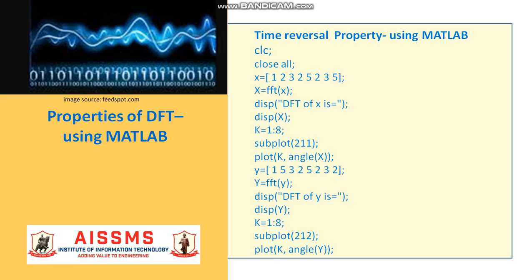For our input sequence X equal to 1, 2, 3, 2, 5, 2, 3, 5, the DFT calculated using FFT of X is stored in capital X and then displayed. For K going from 1 to 8 we will use subplot to plot this and then use command plot K comma angle of this calculated DFT of X. We now have to calculate DFT of a time reverse signal.